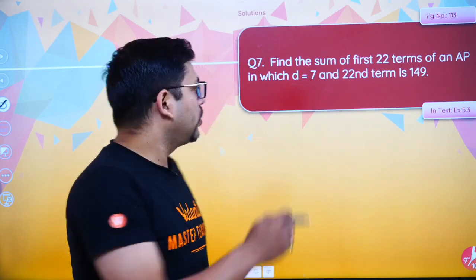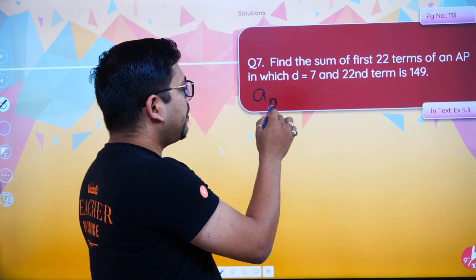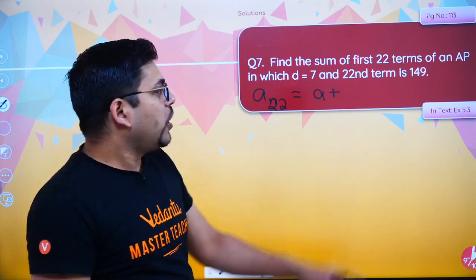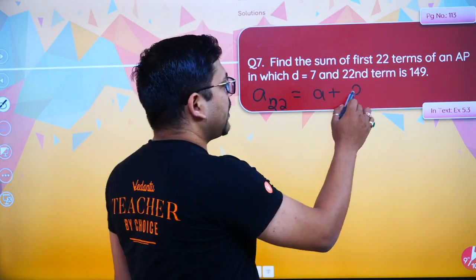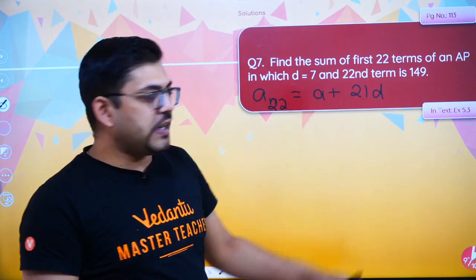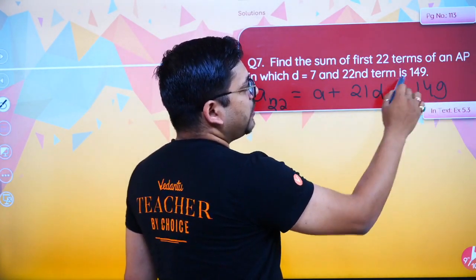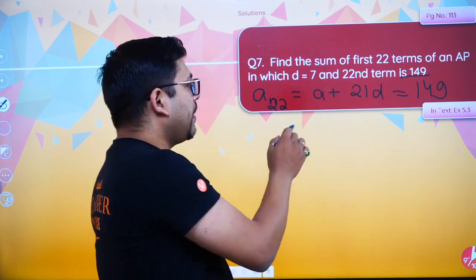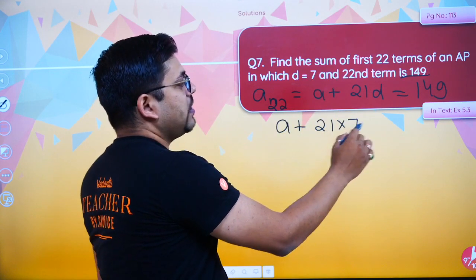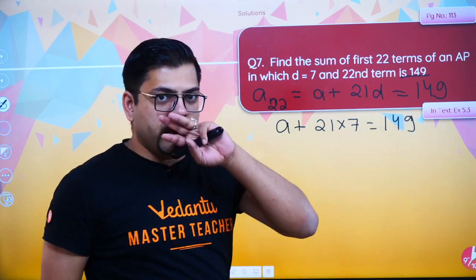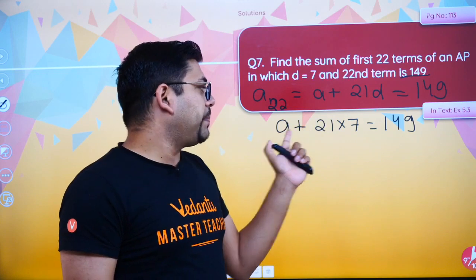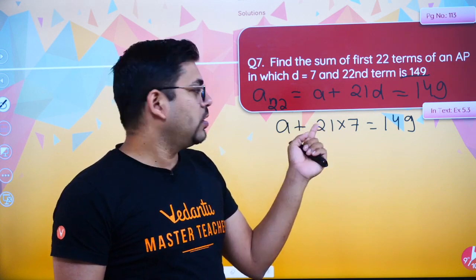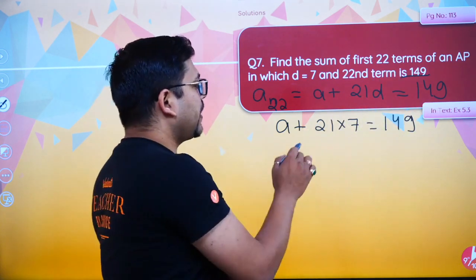So for the 22nd term, you use the formula: A22 = A + (N−1)D. So 22 minus 1 gives 21, meaning A + 21D. That equals 149, because the 22nd term is given as 149. D is 7, so you write A + 21×7 = 149. Hence you get A equals 2.